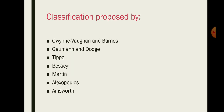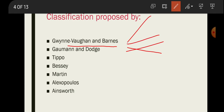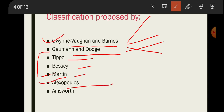The classification of fungi was proposed by many scientists. The first important classification was presented by Gagne Wogan and Barnes, which divided fungi into four classes: Phycomycetes, Ascomycetes, Basidiomycetes, and Deuteromycetes. Second classification was by Goman and Dodge, third by Tippo and Martin. These classifications are now considered ancient and unused. Currently, we study only two classifications: Alexopoulos' classification and Gagne Wogan's classification.